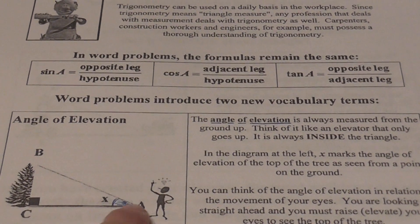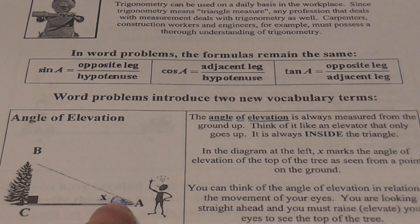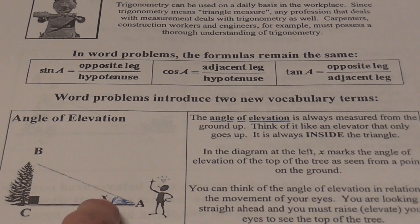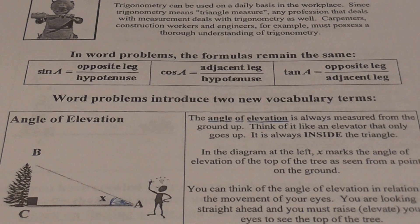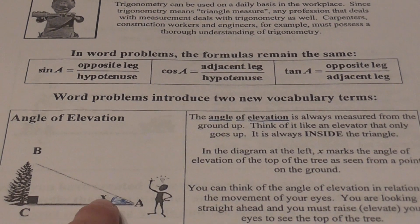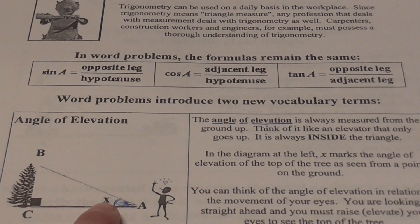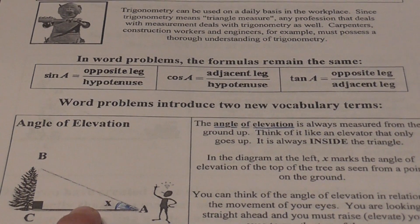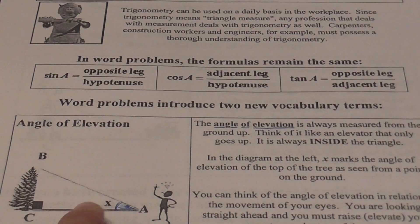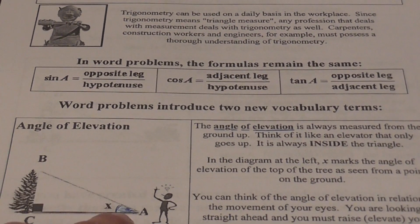So in an angle of elevation, if this is the ground down here, the angle represented between the top of what you're looking at, like a tree for example, would be your angle of elevation. So in the diagram here, it shows the X marks the angle of elevation of the top of the tree as seen from the point of view of the ground.